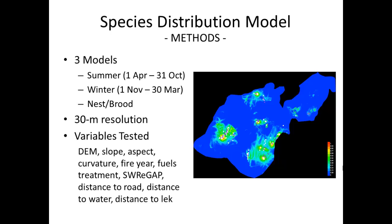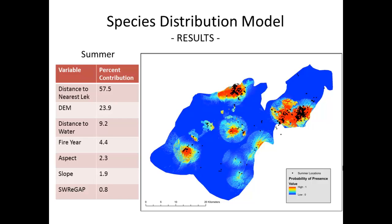Our variables were examined at a 30-meter resolution, and to start we looked at 11 relevant variables for this population. For our summer species distribution model, the red areas show high probability of presence and blue shows low probability of presence, with black dots representing actual telemetry locations. You can see the model is starting to do a decent job of predicting where sage-grouse are.